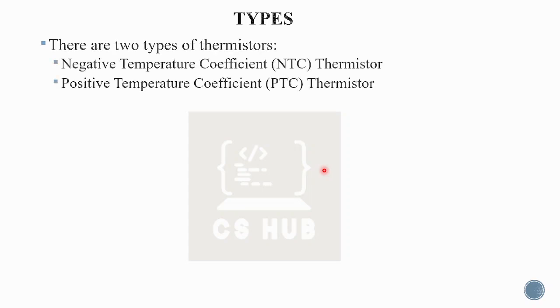The types of thermistor — note this refers to types, not shapes. The three shapes are beads, cylinder, and rod shape. The two types of thermistor are: Negative Temperature Coefficient thermistor (NTC) and Positive Temperature Coefficient thermistor (PTC).